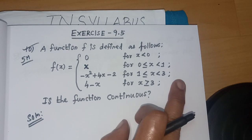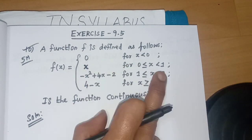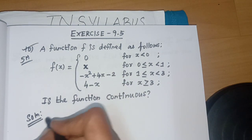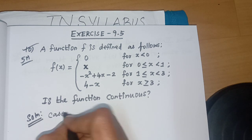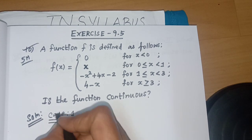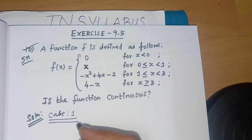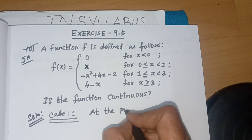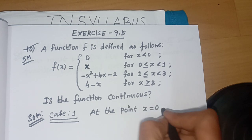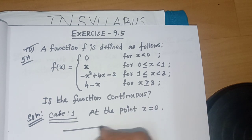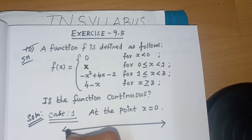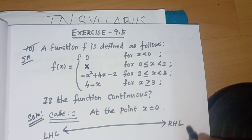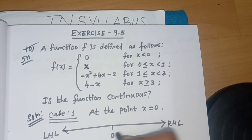We have critical points at 0, 1, and 3 — so we have 3 cases to check. Case 1: at the point x = 0. Draw a number line. The left side is the Left Hand Limit (LHL) and the right side is the Right Hand Limit (RHL).